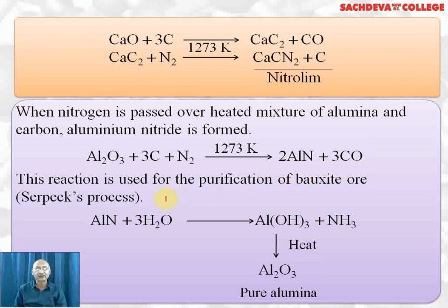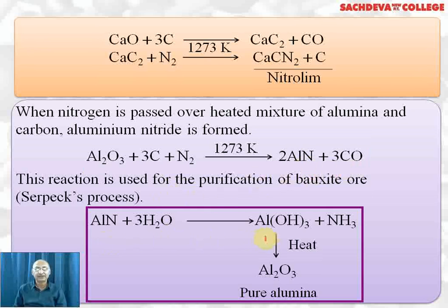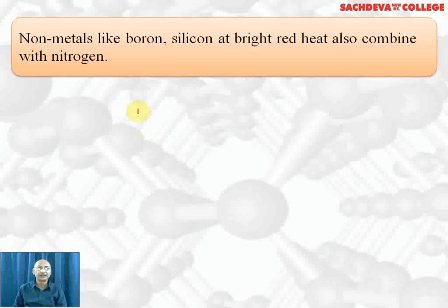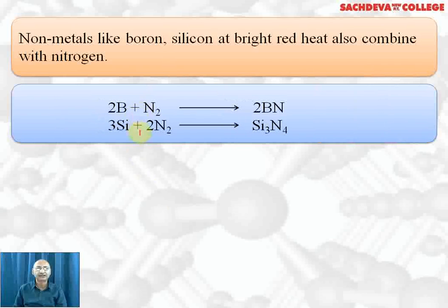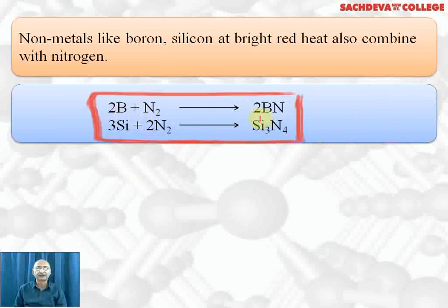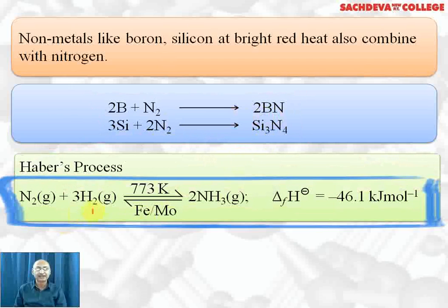This reaction is used for purification of bauxite by the Serpeck process. Aluminium nitride gets hydrolyzed to form aluminium hydroxide plus ammonia, which on further heating at high temperature gives pure aluminium. Non-metals like boron and silicon at bright red heat also combine with nitrogen. Two boron plus nitrogen forms boron nitride. The structure of boron nitride is similar to graphite; it is also called inorganic graphite. Silicon reacts with nitrogen to form silicon nitride.